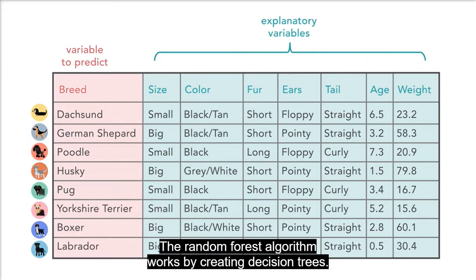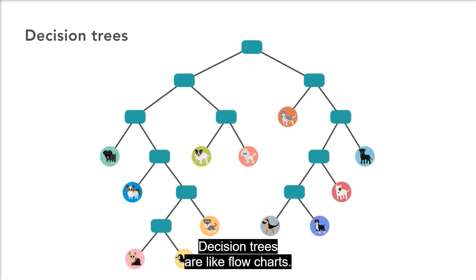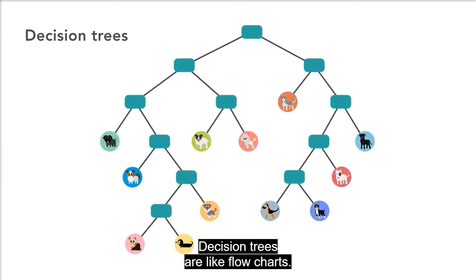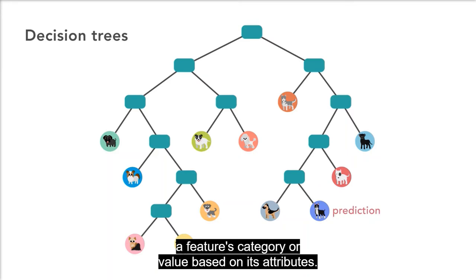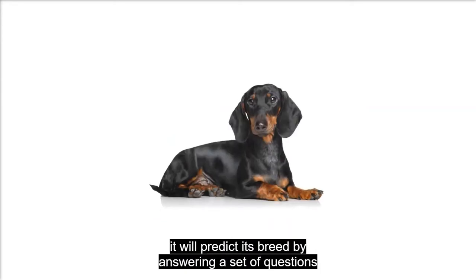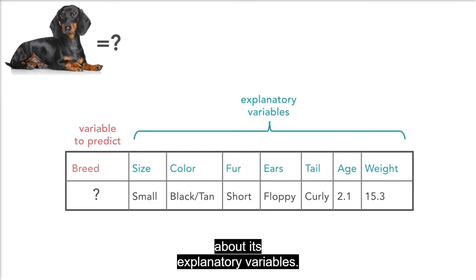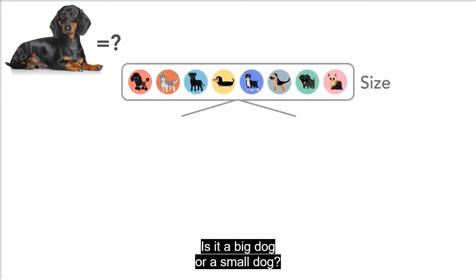The random forest algorithm works by creating decision trees. Decision trees are like flow charts. They create a set of rules for predicting a feature's category or value based on its attributes. For example, if I present my decision tree with a new dog, it will predict its breed by answering a set of questions about its explanatory variables. Is it a big dog or a small dog?